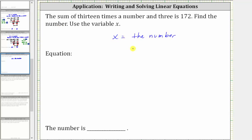Now from here, we need to write an equation from the first sentence. We have the sum of 13 times a number, or 13 times x and three is 172. Because we have a sum, we know we are adding. We are adding 13 times a number, or 13 times x, which is 13x and three.